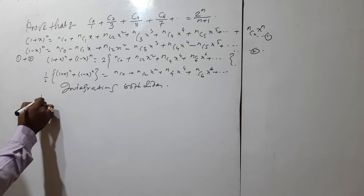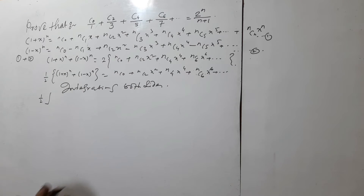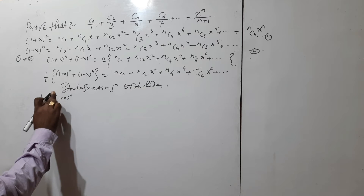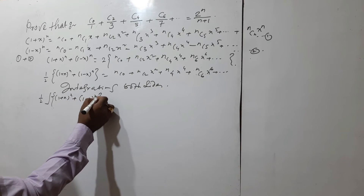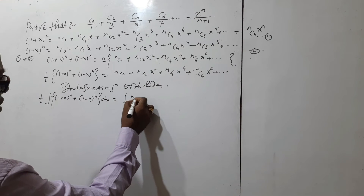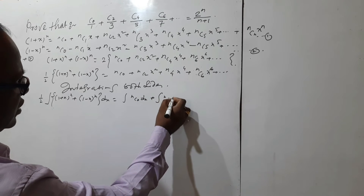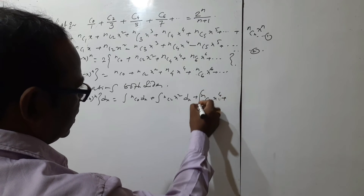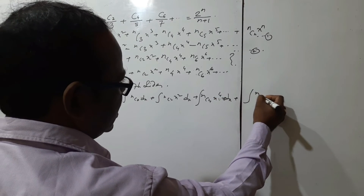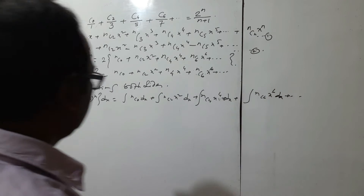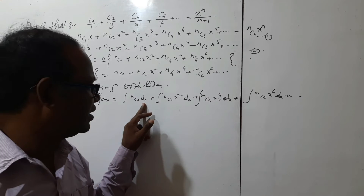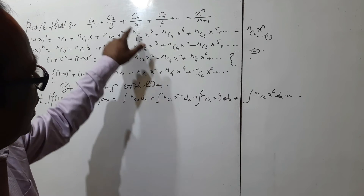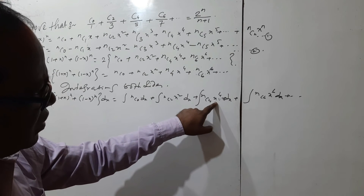We first write the expression and then apply the limits. Integrating the right-hand side: the integral of nC0 dx gives nC0·x; the integral of nC2·x² dx gives nC2·x³/3; the integral of nC4·x⁴ dx gives nC4·x⁵/5; and the integral of nC6·x⁶ dx gives nC6·x⁷/7.